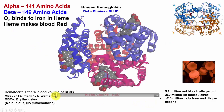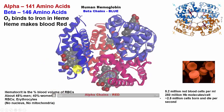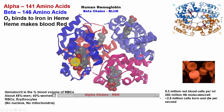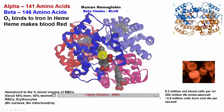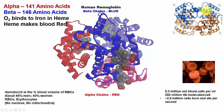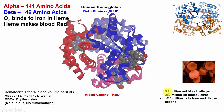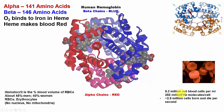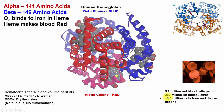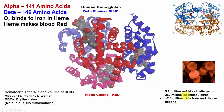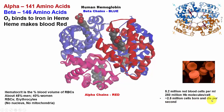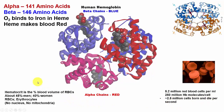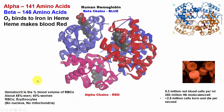Here is the hemoglobin molecule — you can see Fe in the middle, the heme, and the subunits. The beta chains are in blue, the alpha chains are in red, and when they bind oxygen you can see movement. There are about 5.2 million red blood cells per milliliter of blood, with 250 million hemoglobin molecules per cell, and 2.5 million cells born and dying per second.